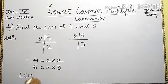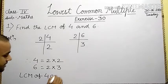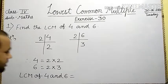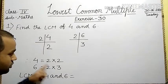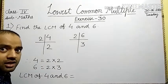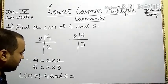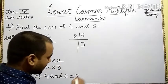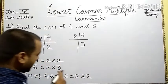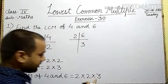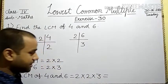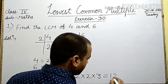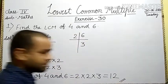Lastly, we write LCM of 4 and 6. Which numbers occur? The 2 and 3. We write the maximum times each occurs. Here, 2 occurs 2 times; 3 occurs only 1 time. And lastly, we find the product: 2 into 2 into 3 gives 12. This is your required answer. Is it clear? Now, let us discuss question number 2.